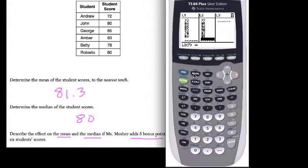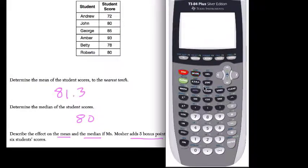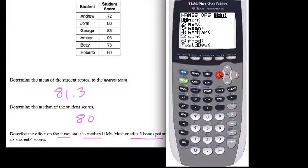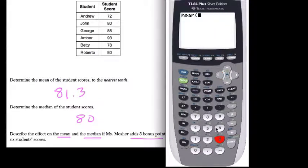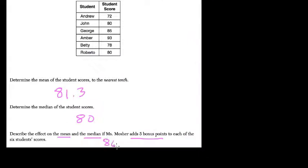So that way we can just go through that same process. Hit second, stat, and here we want to find the mean, choice three of list two this time, second two. Notice the mean is shifted up by five, so instead of 81.3 it becomes 86.3. That's the mean. The whole thing is shifted up five values.